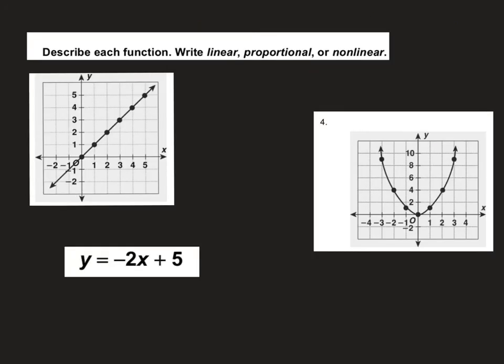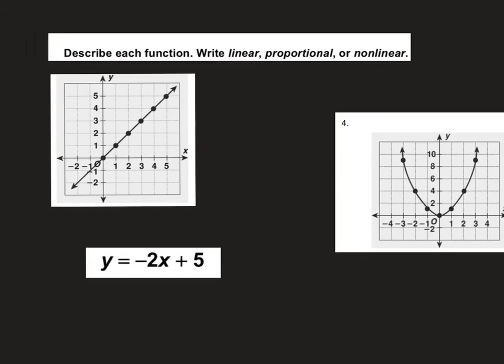This last question asks you to identify or describe the functions that have been listed, write if it's linear or proportional or non-linear. We have a graph to look at, an equation to look at, and another graph to look at. I can see that this first one makes a straight line, so it is linear. And then if I have to look about proportional, I can just look and see if it passes through the origin. And there's my origin, and it does. So this would be labeled also as proportional.